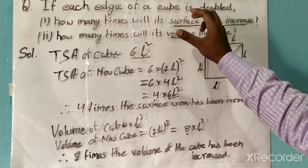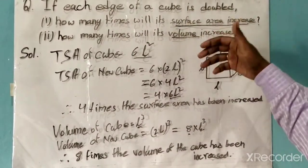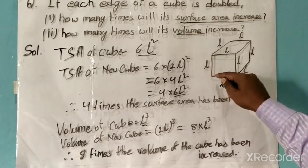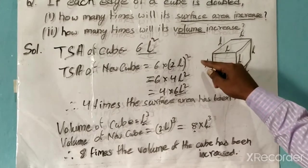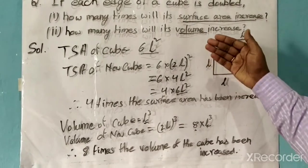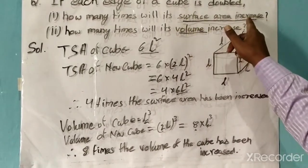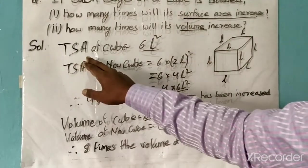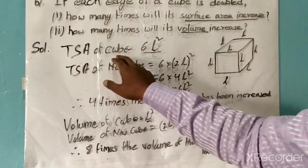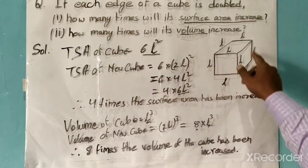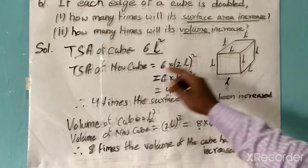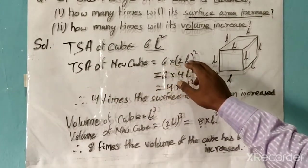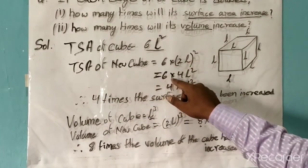Let's revise the question again. In the question it has been asked: if there is a cube and its edges have been doubled — suppose L is the edge and it has been doubled to 2L — how many times will the surface area increase and how many times will the volume increase? The total surface area of the cube is 6L squared. For the new cube with doubled edges, the total surface area will be 6 into (2L) the whole square.